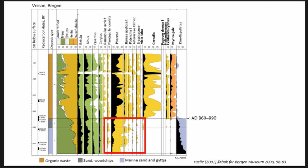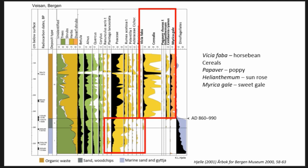When we come to medieval time it's something completely different. We get species like Vicia faba, a lot of cereals compared to the bottom layers, Papaver, Helianthemum, and Myrica, which is very common. The most common of these species is Centaurea cyanus — that curve is absent from the lower layers.